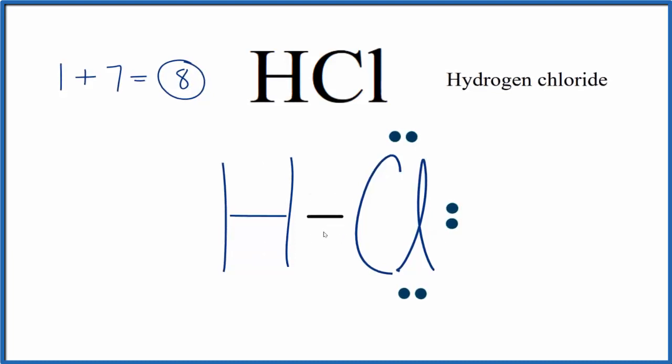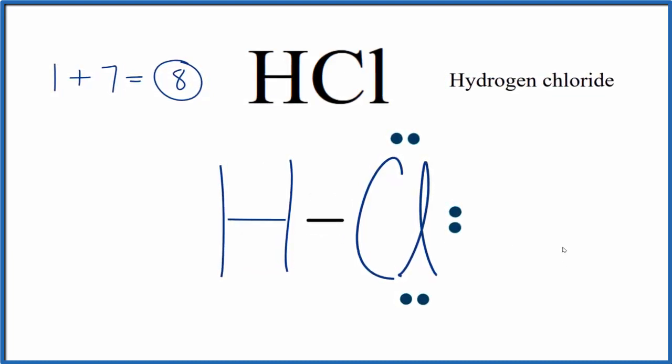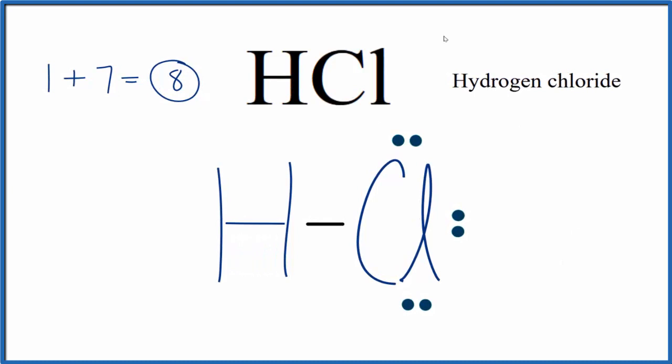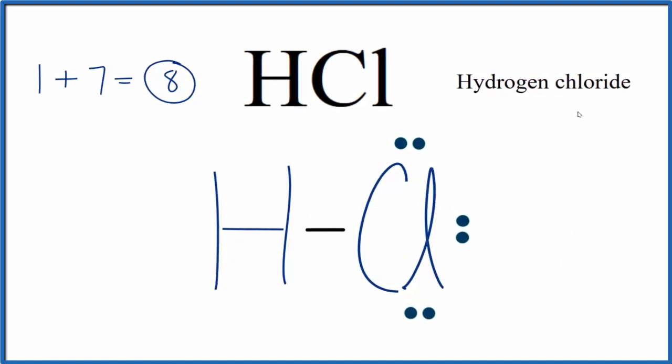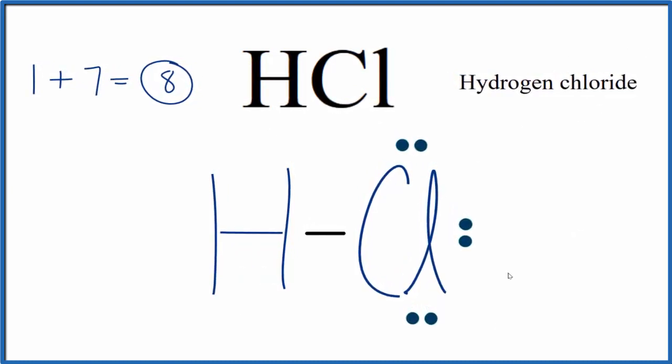We have a covalent bond here. This is Dr. B with the Lewis structure for HCl. Specifically, we're talking about hydrogen chloride gas, but this would also work for HCl, hydrochloric acid. Thanks for watching.